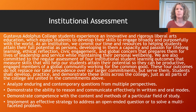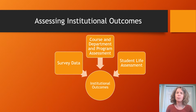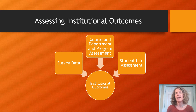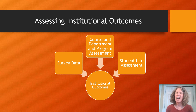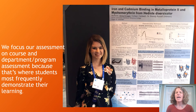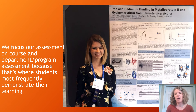We assess institutional outcomes by bringing together collections of data from across the college — survey data, particularly national surveys, assessment from our courses, departments and programs, as well as assessment from other divisions like student life and other student-facing offices. We don't do a lot of assessment at the institutional level all on its own, meaning you probably won't be asked to do something that is only for institutional assessment other than maybe being asked to publicize a survey. That's because we believe we know the most about student learning when we look at where it happens — in courses, departments, and programs — and we feed that data up in aggregated form to the institutional outcomes.